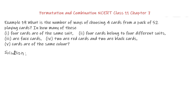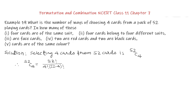We have to select 4 cards out of 52 cards. Selecting 4 cards from 52 cards is 52C4. Therefore, 52C4 equals 52 factorial upon 4 factorial into (52 minus 4) factorial.